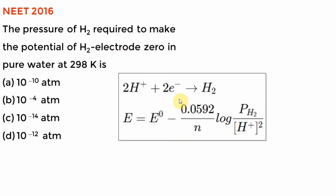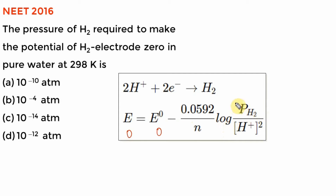Pull up our Nernst equation. The reaction is: 2H⁺ + 2e⁻ → H₂. E equals E° cell minus 0.0591/n × log(P_H₂ / [H⁺]²). They say E_cell should be zero and E° cell is zero. So this whole log term has to be zero — meaning the argument must equal 1. Therefore: P_H₂ = [H⁺]². For pure water, K_w = [H⁺][OH⁻] = 10⁻¹⁴ at 298 K, so [H⁺] = 10⁻⁷, and P_H₂ = (10⁻⁷)² = 10⁻¹⁴. Option is C.